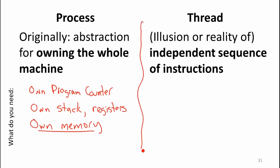The other thing we can do is have a thread. And a thread is not giving you the illusion that you own the whole machine, but it's giving the illusion or the reality, if you have multiple cores, of you have your own stream of instructions. You can execute a sequence of instructions at the same time as some other sequence of instructions is executing on the same machine. What do we need to provide a thread?